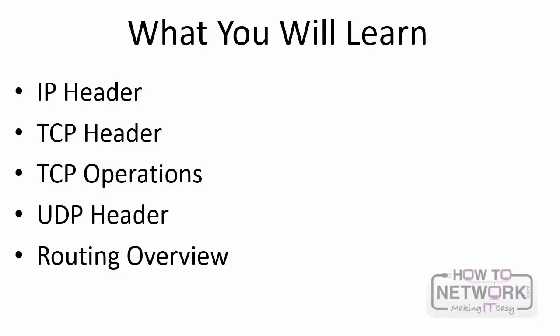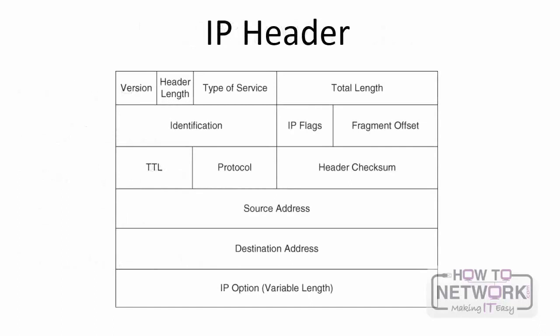The TCP/IP stack maps to the network and transport layers of the OSI model. IP, or Internet Protocol, has become the de facto standard for network communications at layer 3. The IP header contains several important fields. The version field indicates IPv4 with a value of 0100. The type of service field has 8 bits used to set quality of service markings — specifically, the 6 leftmost bits are used for DSCP, commonly associated with QoS marking.